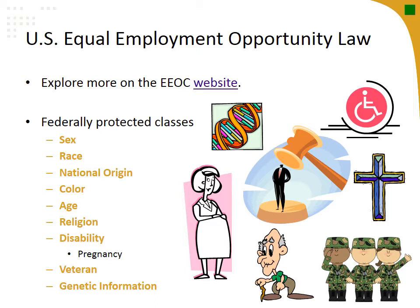The Genetic Information Non-Discrimination Act of 2008, or GINA, makes it illegal to discriminate against employees or applicants because of genetic information. Genetic information includes information about an individual's genetic tests and those of family members, as well as information about any disease, disorder, or condition of an individual's family members. You can't dig into somebody's medical history to save money on your workplace insurance premiums — it's illegal to do that.